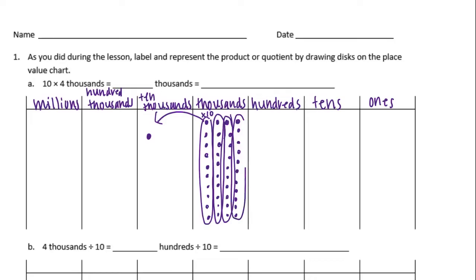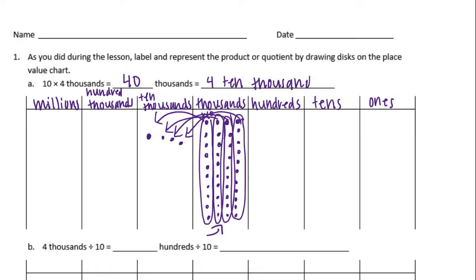That's where the name really makes sense. So here, forty thousands is what we have. Forty thousands is equal to four ten thousands, and four ten thousands is really forty thousand.